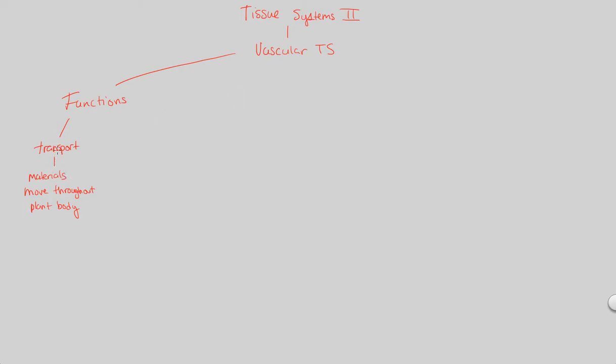That transport is functionally capable of happening because of vascular tissue. The other major function is, of course, support. Support and transport, very easy to remember. Support essentially means the plant doesn't fall over. The plant can be upright, though it can't move, and it will stay upright because of the vascular tissue it has.